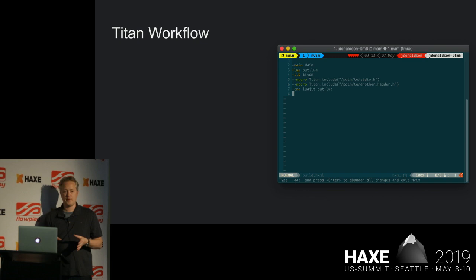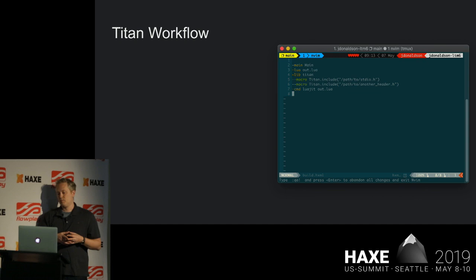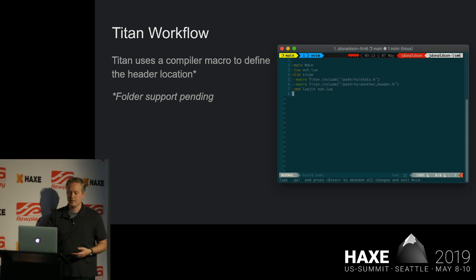Here's how you work with all these pieces in Titan and how it brings those together. Titan uses an HXML build file — most of this is pretty standard. We're calling out a main and calling out the Titan lib. We have two macro definitions here where we're calling into Titan-specific macros telling it to include these header files — passing in standard I/O and some other random header. You can include however many files you want and then we just run it. The compiler macro basically consumes that header file and applies Clang to it with whatever arguments you want, to parse it, find which methods and structs to export, and then put that in the Titan namespace.